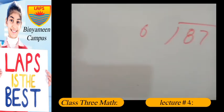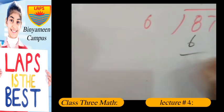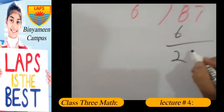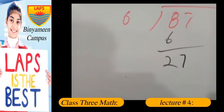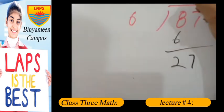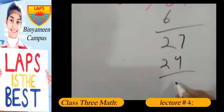The next question: we have to divide 87 by 6. Now it is not actually a multiple of 6, so we have to choose the smaller value which is 6. 6 ones are 6. We subtract these, we get 2. Now 27... 6 threes are 18, 6 fours are 24. We have to choose 6 fours are 24. If we subtract them we get 3, which is the remainder.